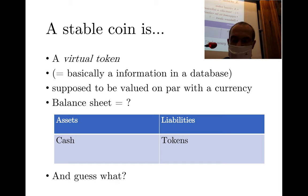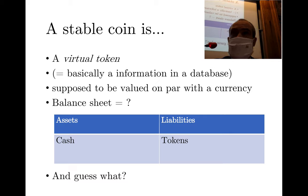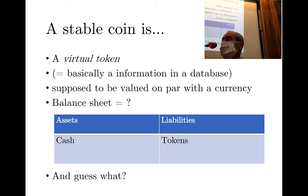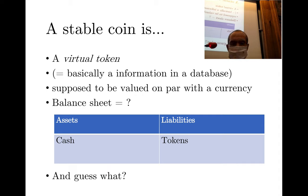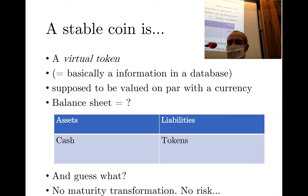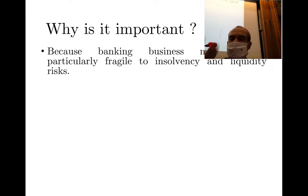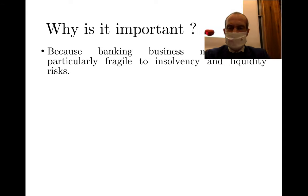Looking at the stablecoin balance sheet — is there risk transformation or maturity transformation? Of course not. You take cash and give tokens that are supposed to be the exact digital mirror of cash. There is no transformation at all. Any risk is for those who own the tokens, but when we speak of risk transformation we mean within the bank, not for the customer.